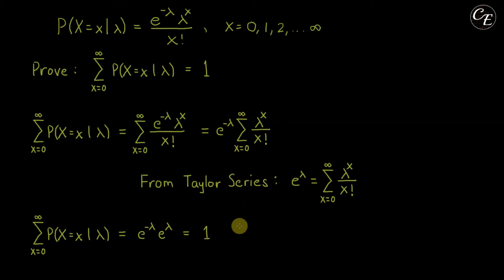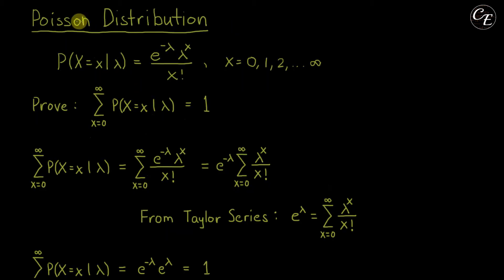So this ends our proof that the summation of the probability mass function of a Poisson distribution with limits where its domain is defined is equal to 1.